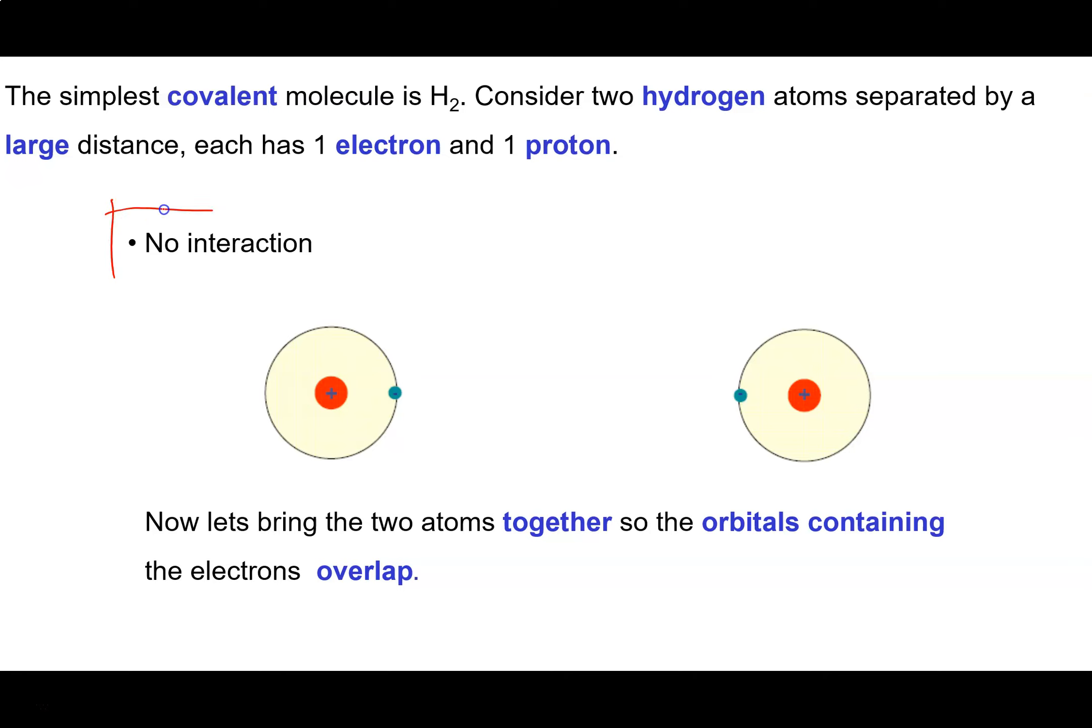If the distance between our two hydrogen atoms is significantly large, then these two atoms will be effectively not interacting at all.